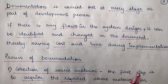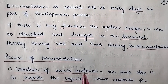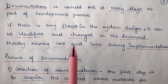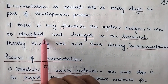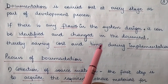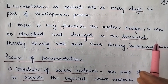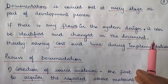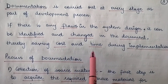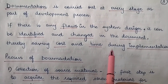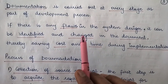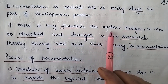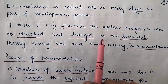Documentation is carried out at every stage as part of the development process. It is not specific to any particular stage of the system development life cycle, but is carried out at each and every stage. If there is any flaw in the system design, it can be identified and changed in the document, thereby saving cost and time during implementation. If flaws are found at the design stage in the document, it is easy to make changes rather than discovering them after implementation.